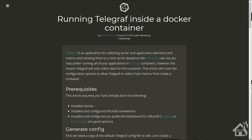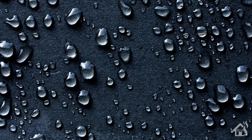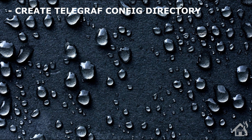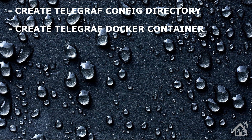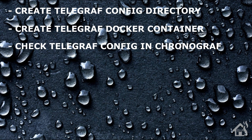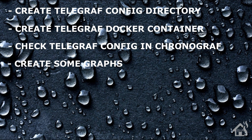Let's do a quick run-through of everything we're going to cover in this video. First, we're going to create a config directory for Telegraf. Once we do that, we're ready to install our Telegraf Docker container. Once that's done, we'll check our Telegraf config in Chronograph to make sure everything looks good, and then lastly we're going to create some graphs of our Docker stats.